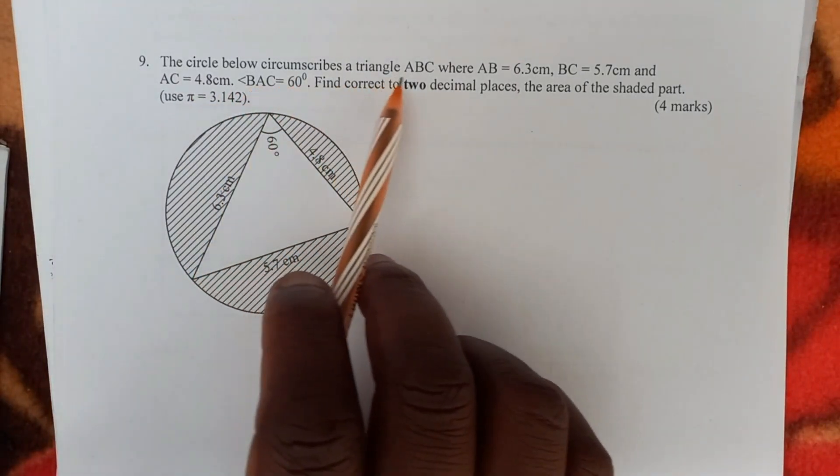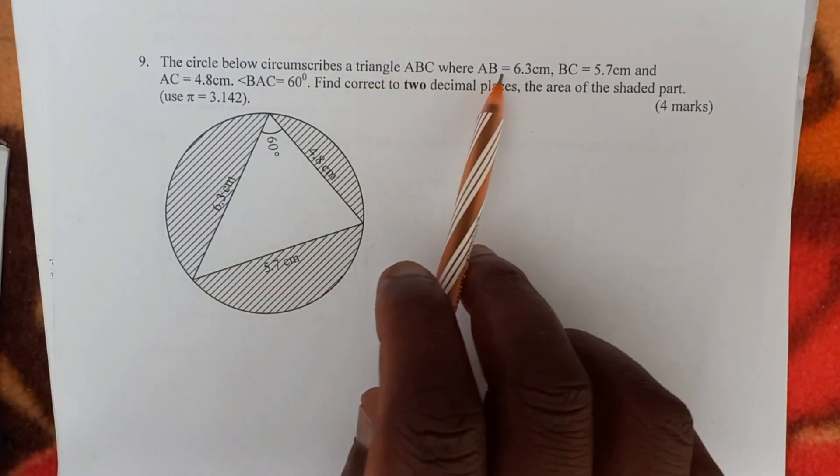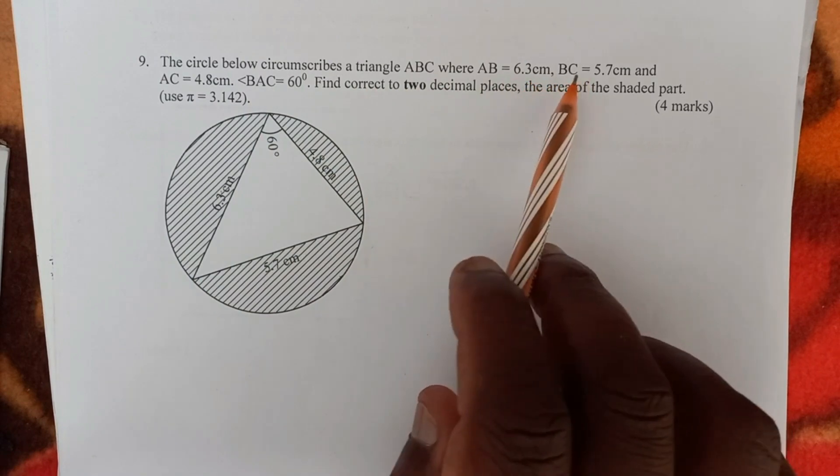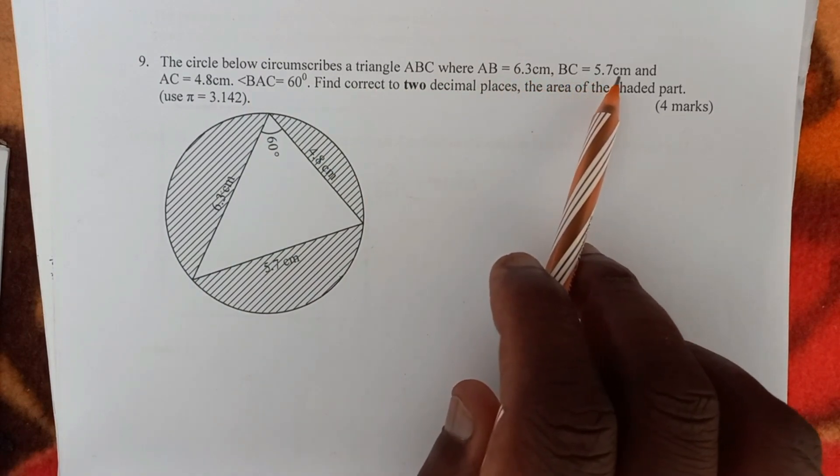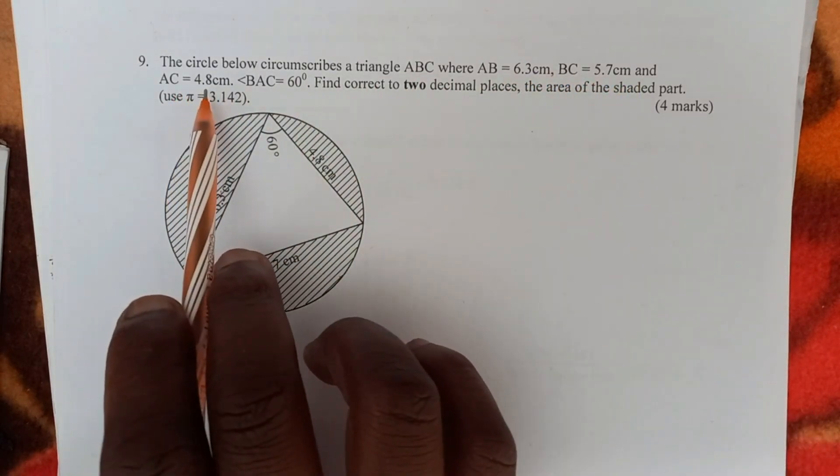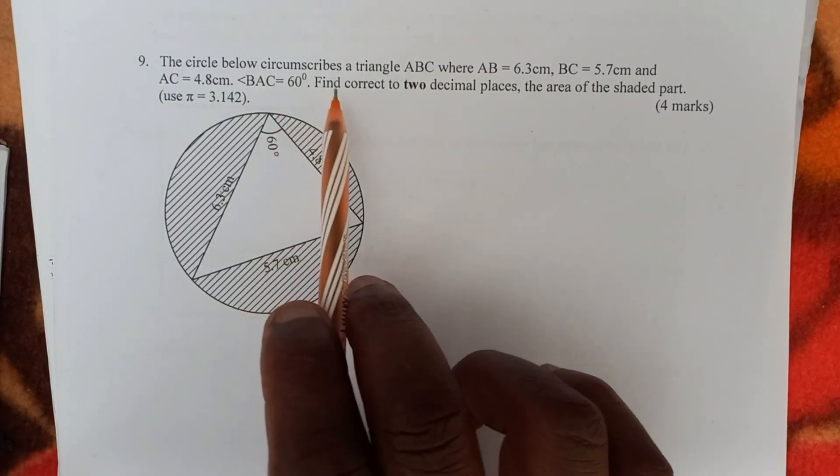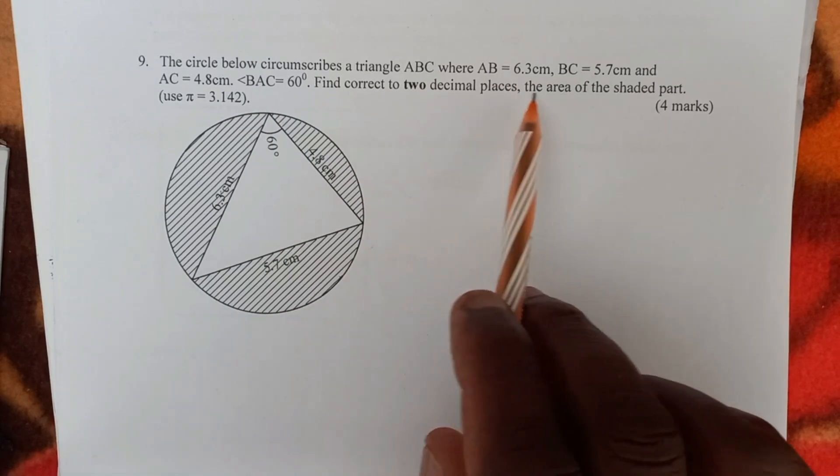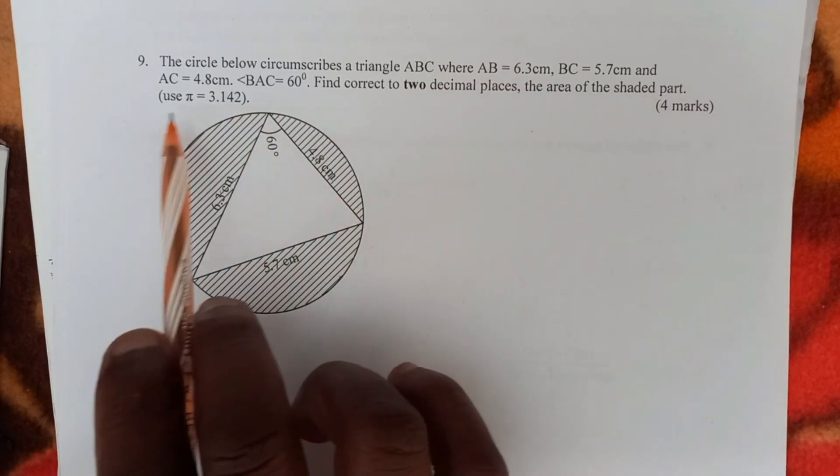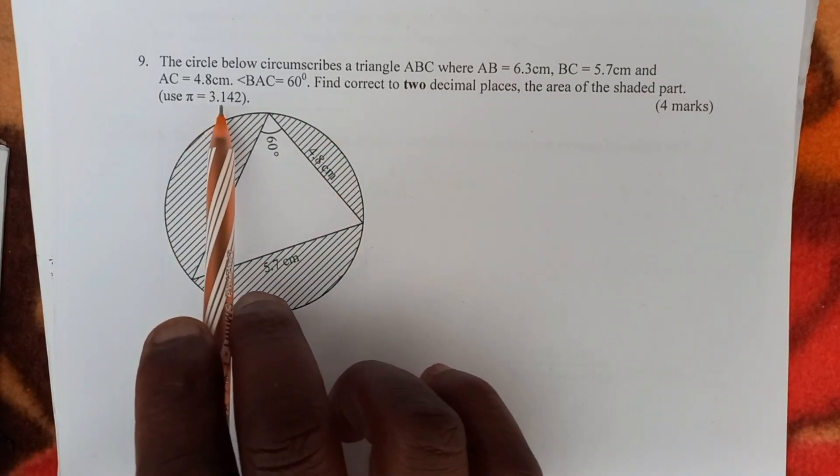The circle below circumscribes the triangle ABC, where AB equals 6.3 cm, BC equals 5.7 cm, and AC equals 4.8 cm. Angle BAC equals 60 degrees. Find correct to two decimal places the area of the shaded part. Use pi equals 3.142.